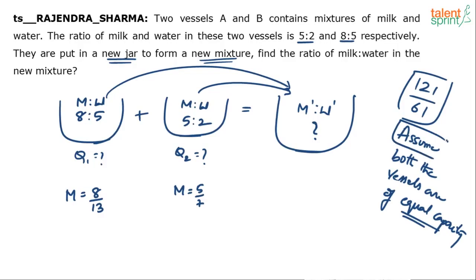But where is it given in the question? Has it been given anywhere in the question that the two vessels A and B are of equal capacity? Only when it says two vessels are of equal capacity, or both of the quantities are equal, or if the ratio of the quantities are given, then only you can find out the final answer.